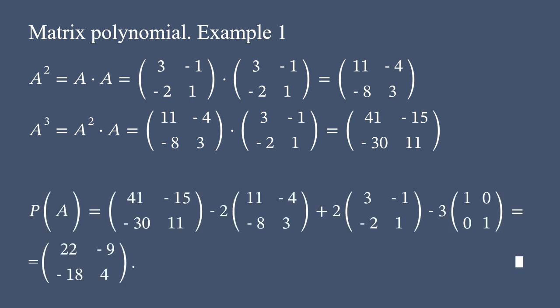Now we are able to determine the value of matrix polynomial by plugging the results we got. By performing the given operations with matrices, we eventually arrive at a final result, which is a matrix having elements 22, negative 9, negative 18, and 4.